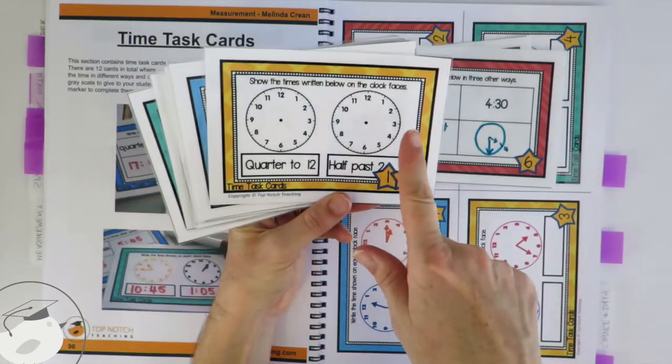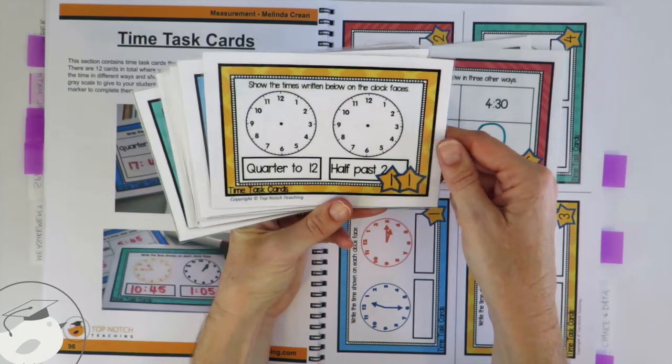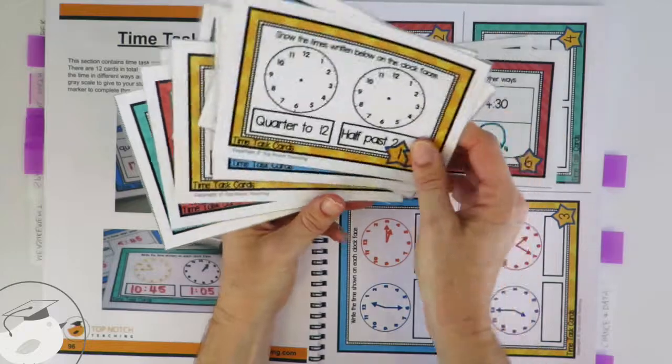You've also got your students then drawing in the hands of the time to show the different times, half past two and quarter to twelve, so there's lots of different cards there for your students to practice time.